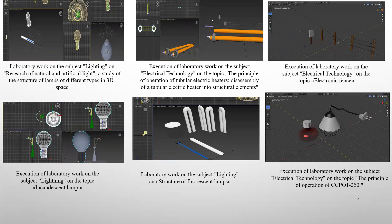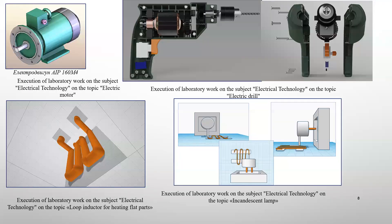There are some examples of laboratory work on the subject of lighting and electrical technology. For example, 3D models of natural and artificial light, electric heaters, electronic fans, other equipment, electric motor, electric drill, loop inductor, and incandescent lamp.